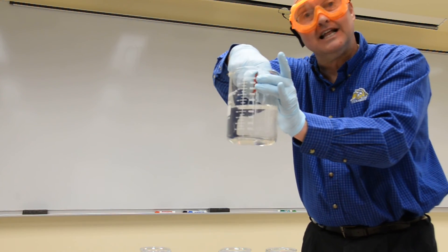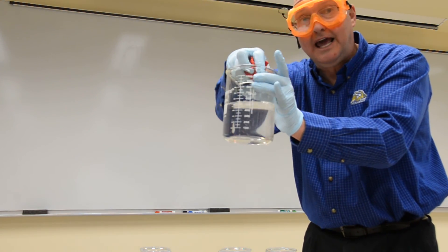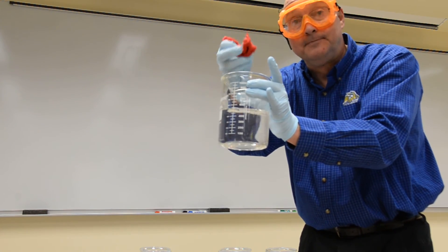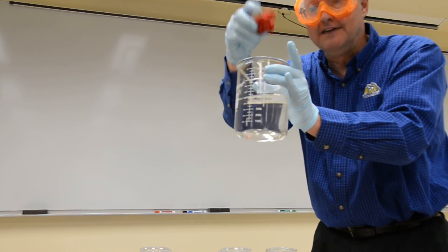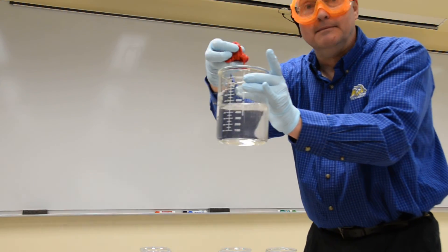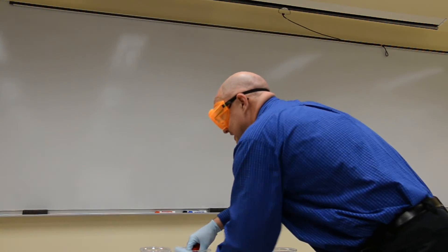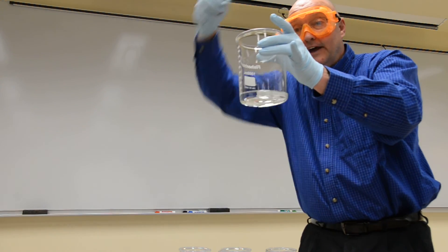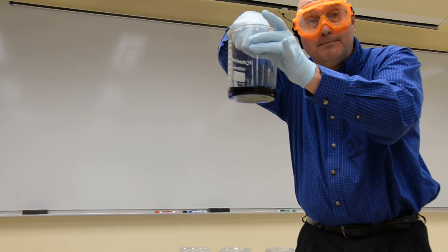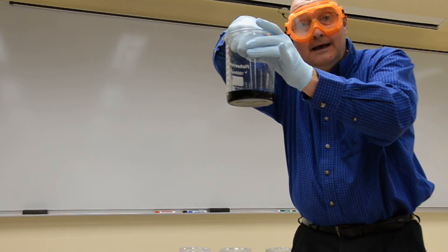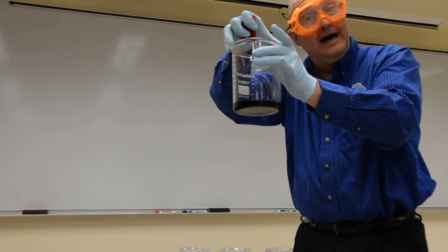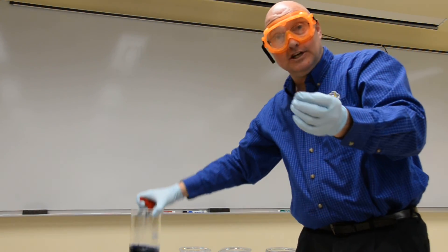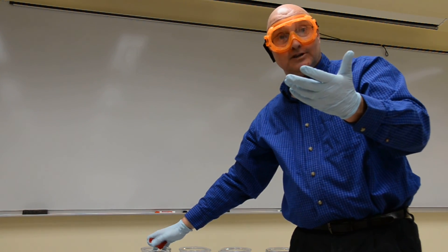But the key thing is that the color of the indicator is really a characteristic of the specific indicator. If I take some of this base and squeeze it into a different indicator, this indicator is thymolphthalein, I can actually get my blue color back. And that's the blue battery. It's an oxidation-reduction acid-base reaction.